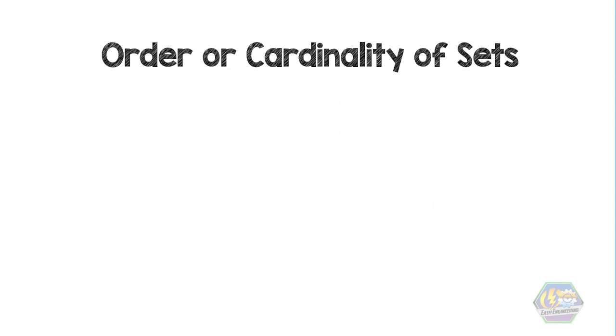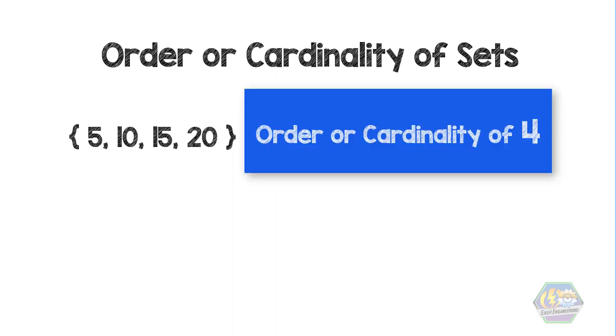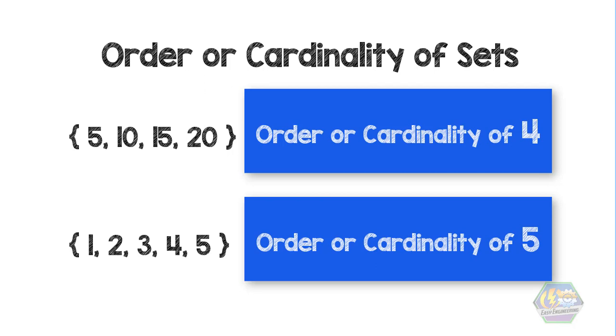For example, the set of 5, 10, 15, and 20 has an order or cardinality of 4. The set 1, 2, 3, 4, and 5 has an order or cardinality of 5.